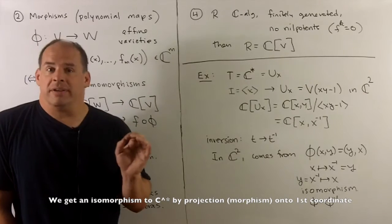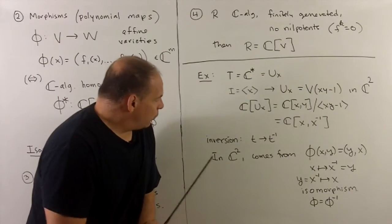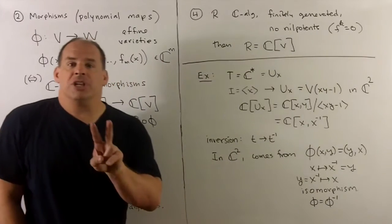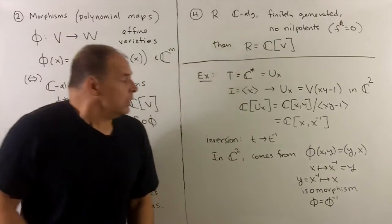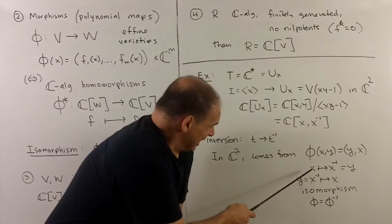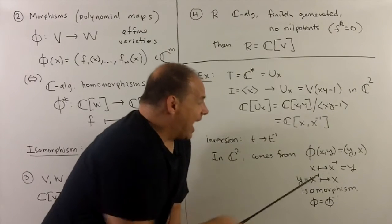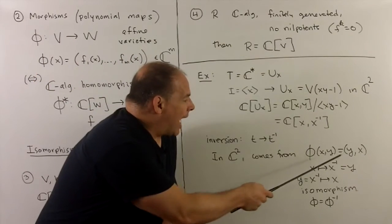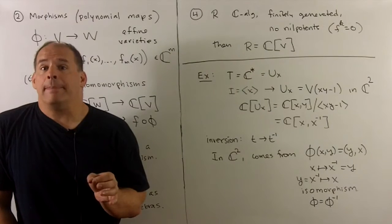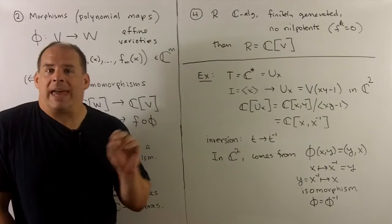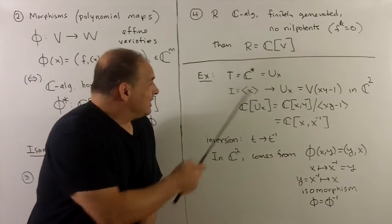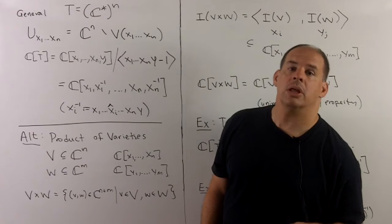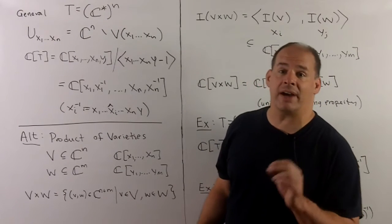Now, let's take a look at the group operation of inversion. If we consider C-star as being in C^2, realized like so, then inversion is just going to be given by switching X and Y. So what do we do here? If I switch X and Y, all I'm doing is sending X to X inverse and X inverse to X. So that's inversion. The map that it comes from, phi(X,Y) equals (Y,X), clearly that's a polynomial map. We also note that it's its own inverse, so we have here an isomorphism from C-star back to itself.